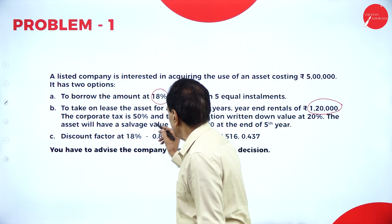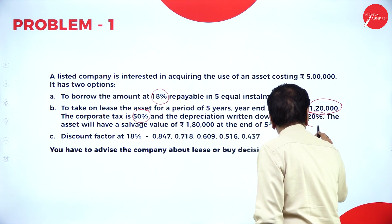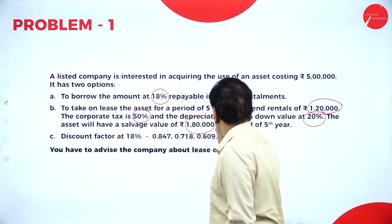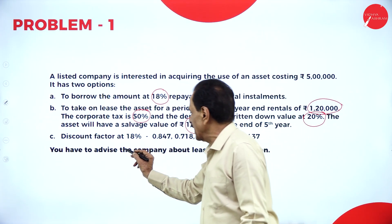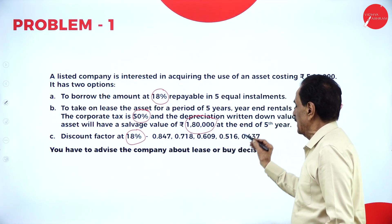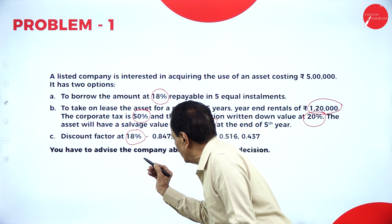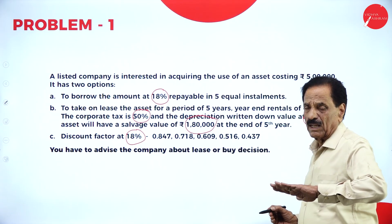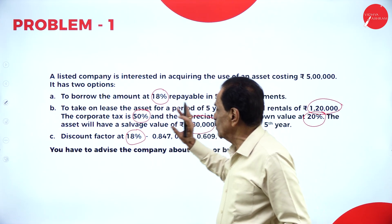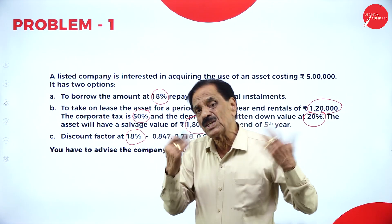If you go on lease the rental value is 1 lakh 20,000. The corporate tax is 50% and the depreciation written down value method is at 20%. The asset will have a salvage value of rupees 1 lakh 80,000 at the end of the fifth year. Discount factors at 18%: 0.847, 0.718, 0.609, 0.516, 0.437. You have to advise the company about the lease or buy decision — whichever is favorable.